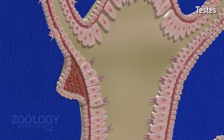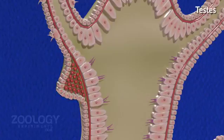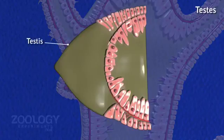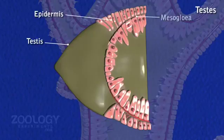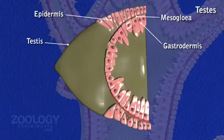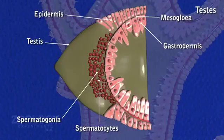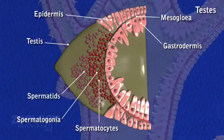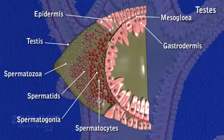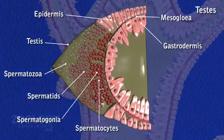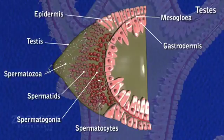Testes are conical outgrowths of the body wall, varying in number from a few to many. They are generally situated near the oral end of the body. Testes are formed by cell division of interstitial cells of the epidermis and get covered from outside by a capsule formed of large epidermal cells. Interstitial cells at the base are spermatogonia, which undergo spermatogenesis through primary spermatocyte, secondary spermatocyte, and spermatid stages to become spermatozoa. Spermatozoa have a head and a long vibratile tail. When mature, sperms are discharged by the rupture of the testes wall at its apical nipple-like knob.